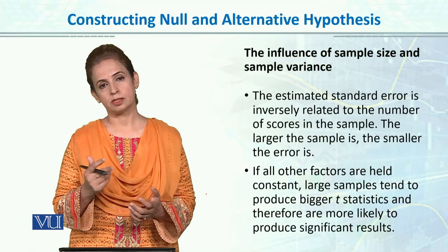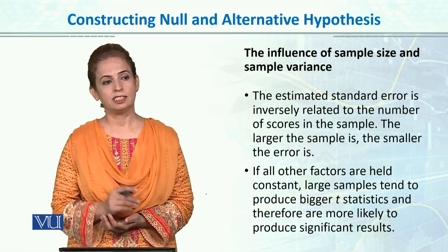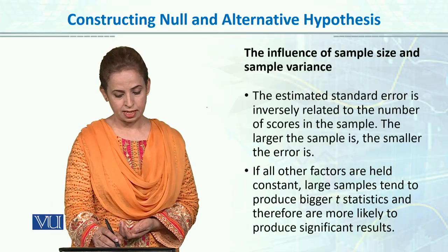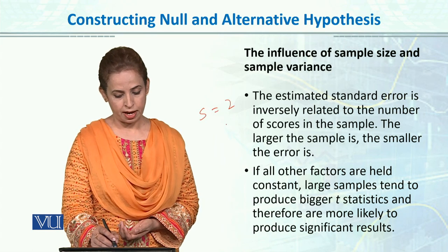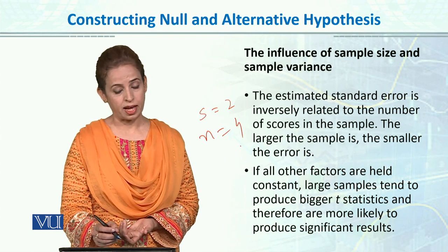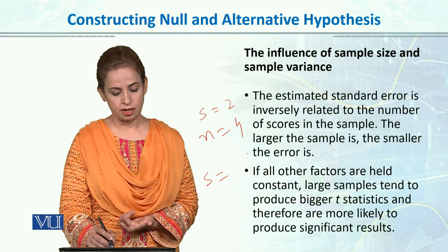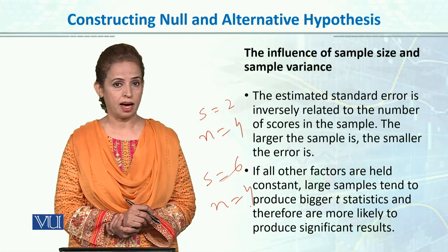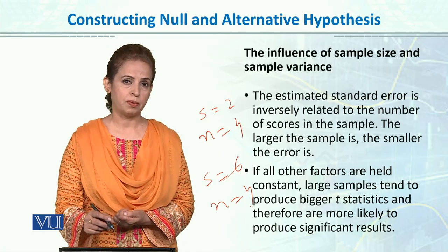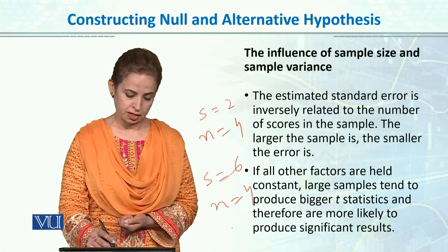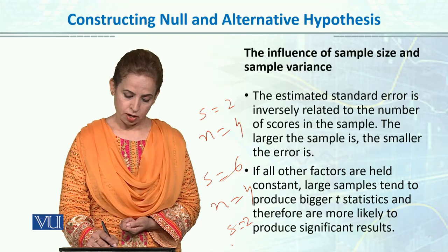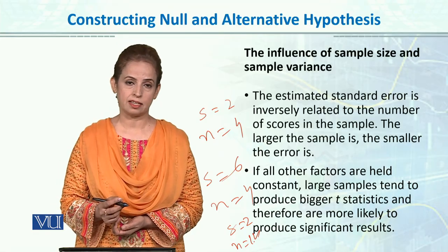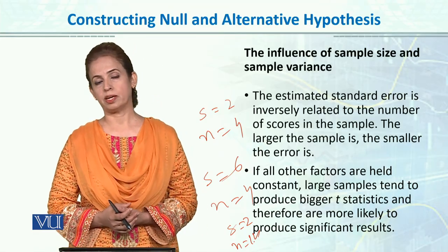You can just take a piece of paper and just play with the data. Aap randomly plug in karayin data ko, ke agar humare paas S ki value 2 hai, aur N ki value 4 hai, aur agar hum S ki value, agar hum 6 kar dheyen, aur N ki value 4 hi rhenne dhe, toh humara T ki value kya aayegi? Aur isi tarah you can practice and play with the data a little bit, ke agar hum S ki value 2 hi rhenne dhe, aur agar hum N ki value 10 kar dhe, yani sample size increase kar dhe, toh phir T ki value phe kya effect aayega?